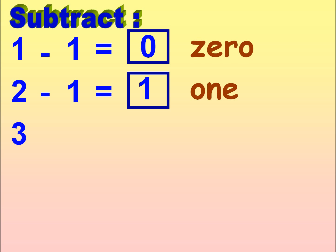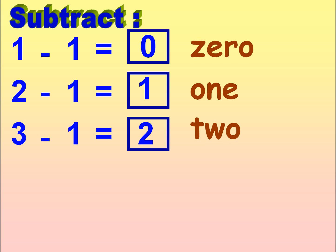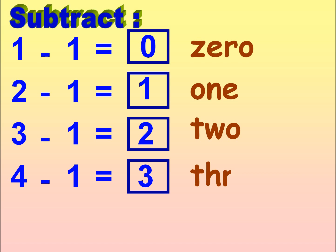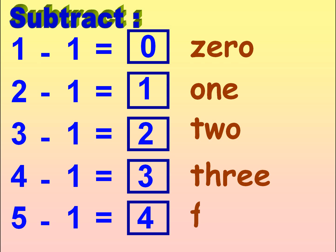3 minus 1 is equal to 2. T-W-O, 2. T-H-R-E-E, 3. 5 minus 1 is equal to 4. F-O-U-R, 4.